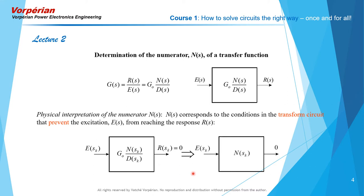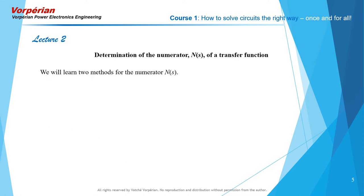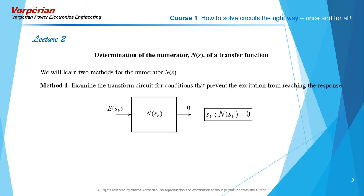E of s evaluated at the root of the numerator produces a null response as the transfer function itself when evaluated at the root of the numerator is zero. Once you see it demonstrated on an actual circuit you'll understand exactly what we're talking about and you will never forget it. I'm going to show you two different methods for the determination of the numerator N of s. The first method is the one I just talked about, and the second method is the method of the extra element theorem.